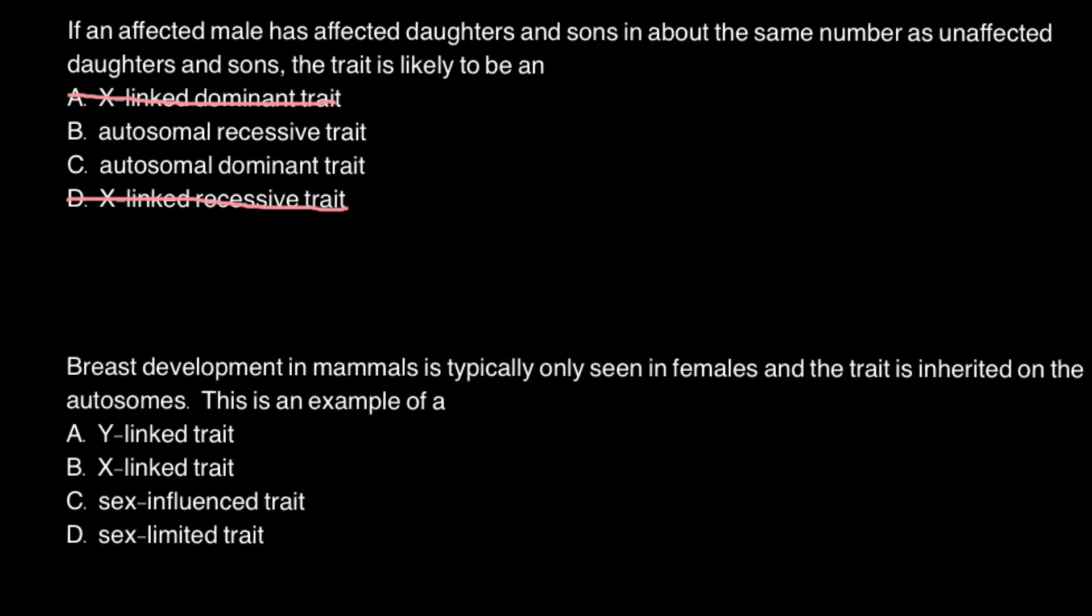So now we have to choose whether it is autosomal recessive or autosomal dominant. For example, if a father would be genotype small a, small a and would be affected, we call this recessive trait. But we may also have a dominant genetic disorder, when one dominant allele would be enough to produce this genetic disorder. So let's think about this possibility: if this person is homozygous recessive, so small a, small a.